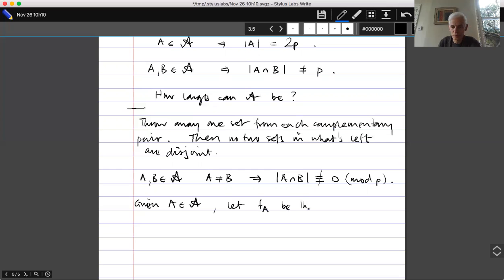So what we'll do is the following. So given a in curly A, let f_a be the polynomial defined by the formula f_a of x equals—so first of all I'm going to get something that when x—so I should be interested in principle when x is a characteristic function of a set b. So if I want to look at the size of a intersect b, then the quantity that I'm interested in is going to be sum over i in a of x_i.